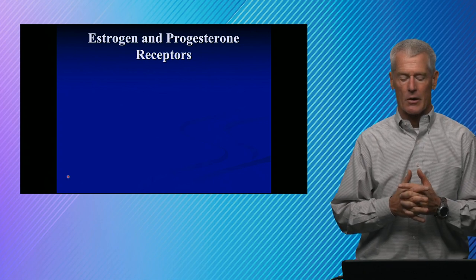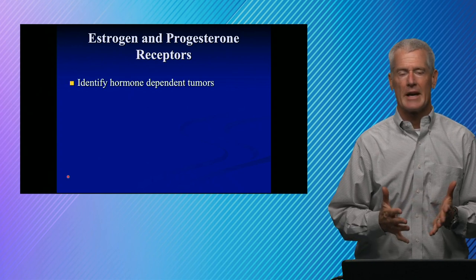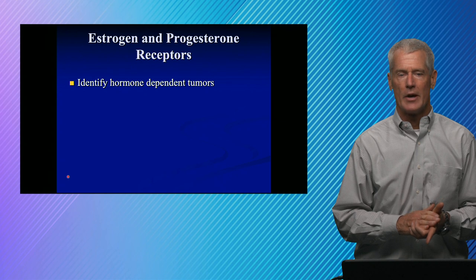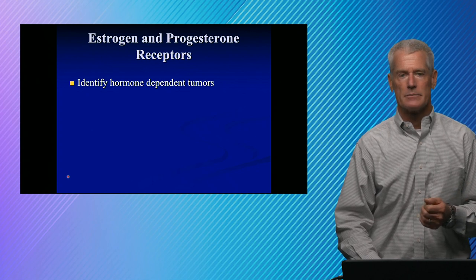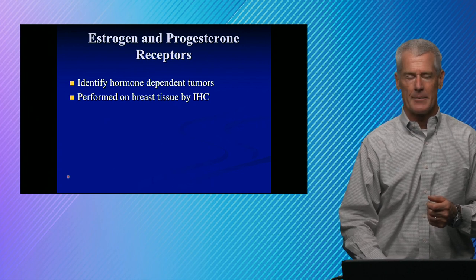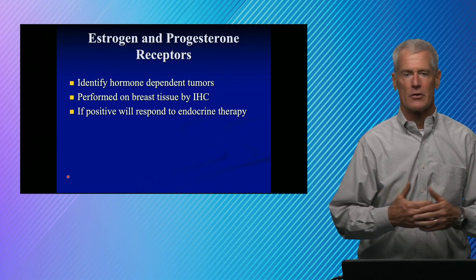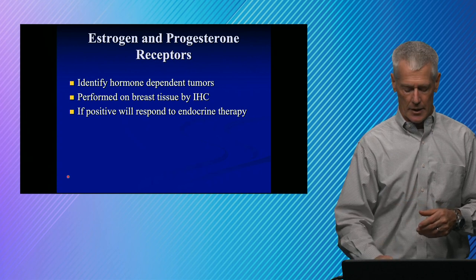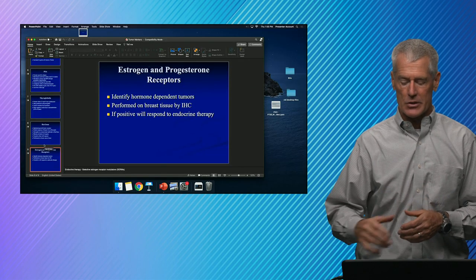The last tumor markers I'll cover are ER and PR — estrogen receptors and progesterone receptors. When we talk about triple-negative breast cancer, we mean HER2-neu negative, ER negative, and PR negative. Some of these tumors are steroid-sensitive; testing is typically done by immunohistochemistry on breast tissue. A positive result indicates the patient is likely to respond to endocrine therapy — SERMs, or selective estrogen receptor modulators. That's a quick overview of tumor markers, and I appreciate you tuning in.